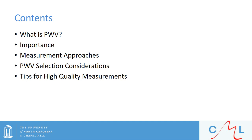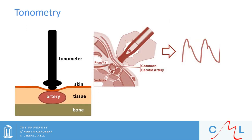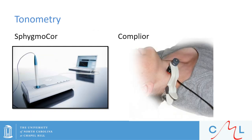We've established that pulse wave velocity is an important measure of arterial stiffness, so now let's discuss some of the measurement approaches. There are several ways to measure pulse wave velocity. These include tonometry, oscillometry, ultrasound, electrocardiogram, photoplethysmography, and transcranial Doppler, among others. Tonometry has been the most widely used method, consisting of applying a force over the center of a superficial artery against an underlying bone. Here are two example devices: on the left, the AtCore SphygmaCor, with the tonometer pen-like device held in a probe holder; and on the right, the complior, with the tonometer held in place by a neck brace.